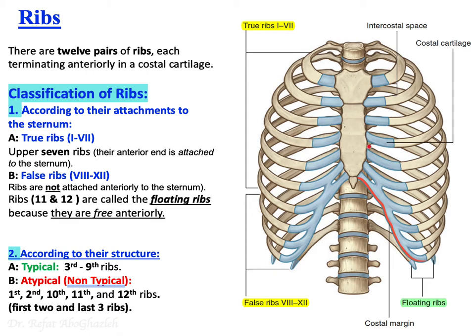Looking at the thoracic cage, it is formed anteriorly by the sternum and costal cartilage, and laterally by the ribs. We have 12 pairs of ribs — 12 on the right and 12 on the left, totaling 24 ribs. They terminate anteriorly as costal cartilage.